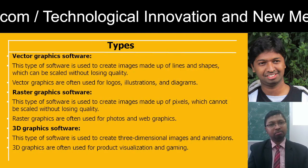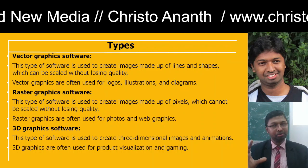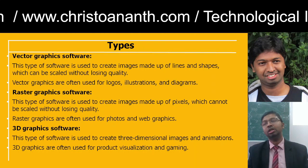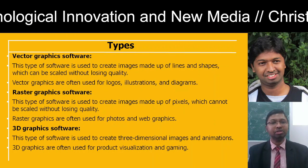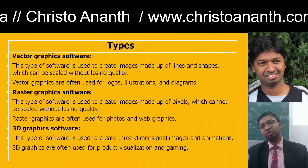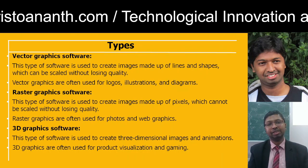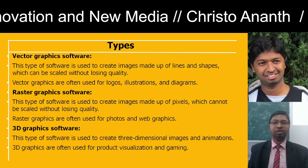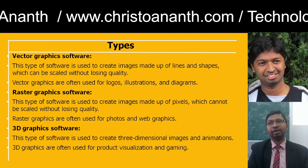With graphics software you can make lines and shapes that can be scaled up or down — made small or large — to fit any width without compromising quality. That's useful for logos, illustrations, and diagrams. Raster graphic software, on the other hand, deals with images made of pixels which cannot be scaled without losing quality. Raster graphics are used for photos or web graphics. 3D graphic software is used for images, animations, product visualization, and gaming.